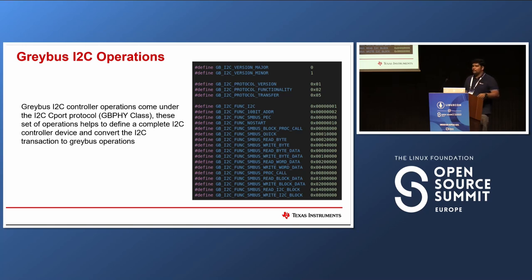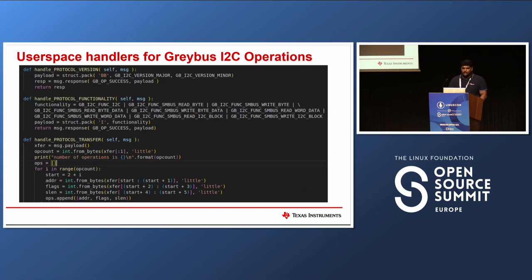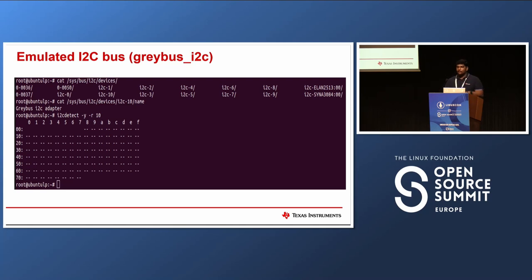In I2C there are only a minimal number of Greybus operations and the main one is just transfer — all I2C relevant transfer operations are contained within that one operation type. You can implement handlers that receive the messages. Looking at the protocol functionality, I am advertising that my virtual I2C controller supports all these transactions. If you look at an actual I2C controller, you need to put transfers on the I2C bus and some devices need to acknowledge and respond. If you run something like i2cdetect on the simple emulated controller, there is no device to respond. To create a useful system you will need devices on this virtual I2C controller.